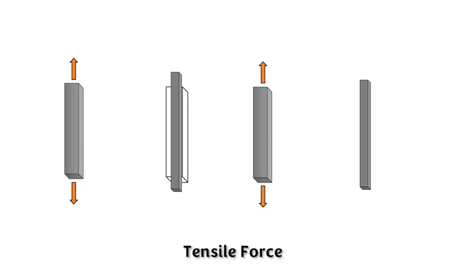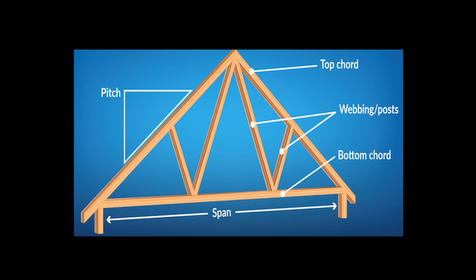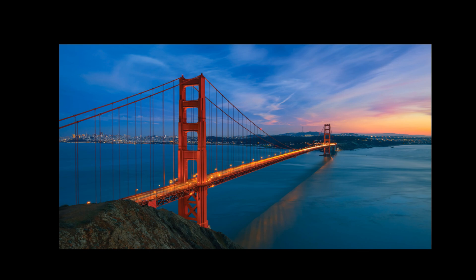The first internal force is tensile force. It is a pulling force. When the load is applied on the structure, a pulling force tends to elongate the member. Once the pulling force is applied, the cross-sectional area changes from its original shape and the area gets reduced. Practical examples are roof trusses and cable-stayed bridges.